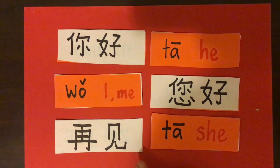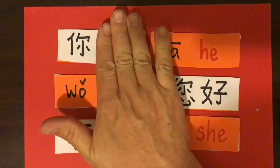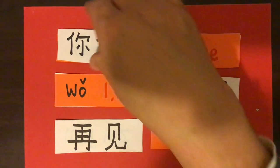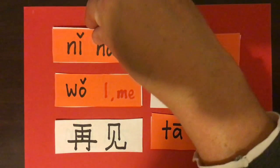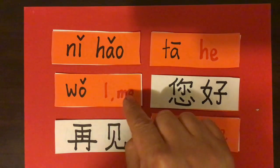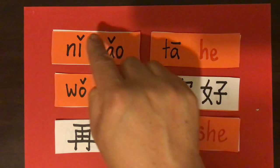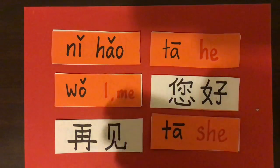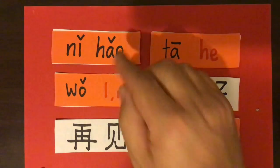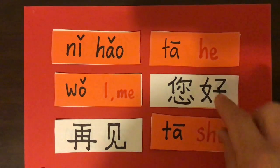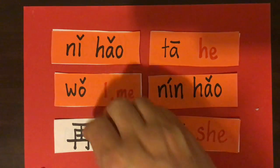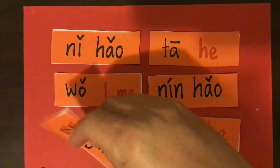Now we have some of our greetings. This greeting here uses the character nǐ, which means 'you.' So we have nǐ hǎo, which all of you know now — nǐ hǎo for hello. I've written the English translation in red, but not for the next three, because we've been covering these a lot and you really should know them by now. So nǐ hǎo is hello, nín hǎo is the polite hello, and zàijiàn for goodbye.